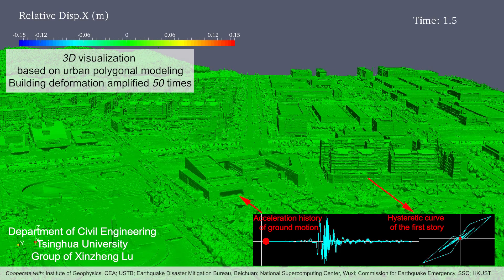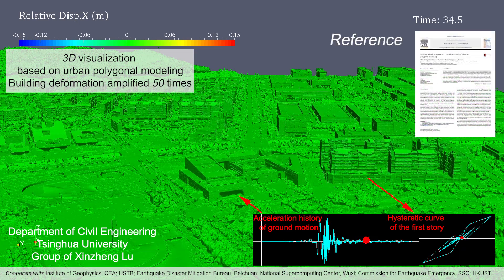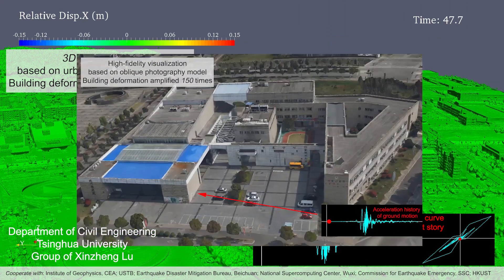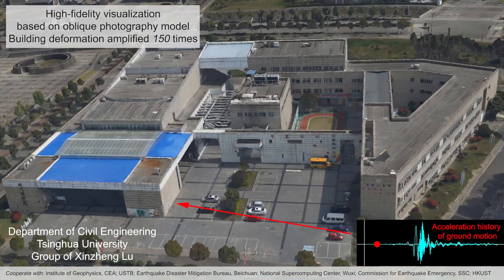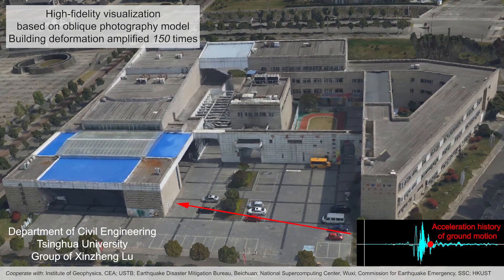By combining the regional seismic damage simulation of buildings and the fine 3D urban polygonal modeling, the nonlinear seismic responses at any time are visualized in high fidelity for every building and every floor. By combining the building model from oblique photography with nonlinear time history analysis results, the seismic responses of buildings are visualized in high fidelity.